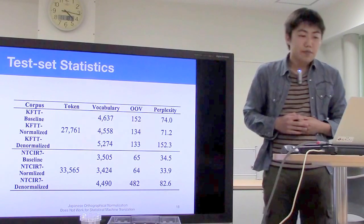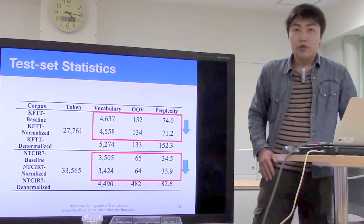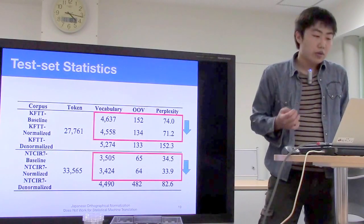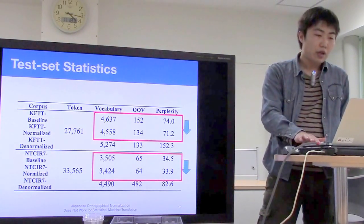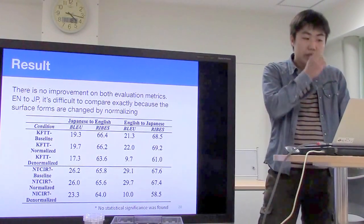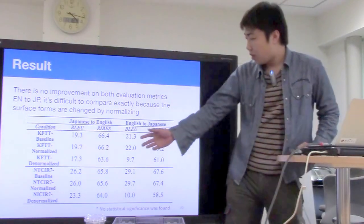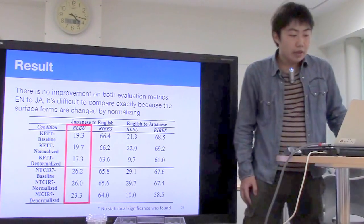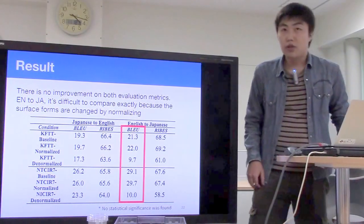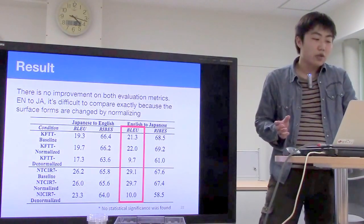This is the test set statistics. We compare the KFTT corpus and NT37 corpus. This table shows that vocabulary, out-of-vocabulary, and perplexity are reduced by normalization. However, looking at the translation results, there is no improvement on either evaluation metric — BLEU and RIBES. The left shows Japanese-to-English translation, and the right shows English-to-Japanese translation. In Japanese-to-English translation there is no improvement, and while there is some improvement in English-to-Japanese translation, it is difficult to compare exactly because surface forms are changed by normalization.